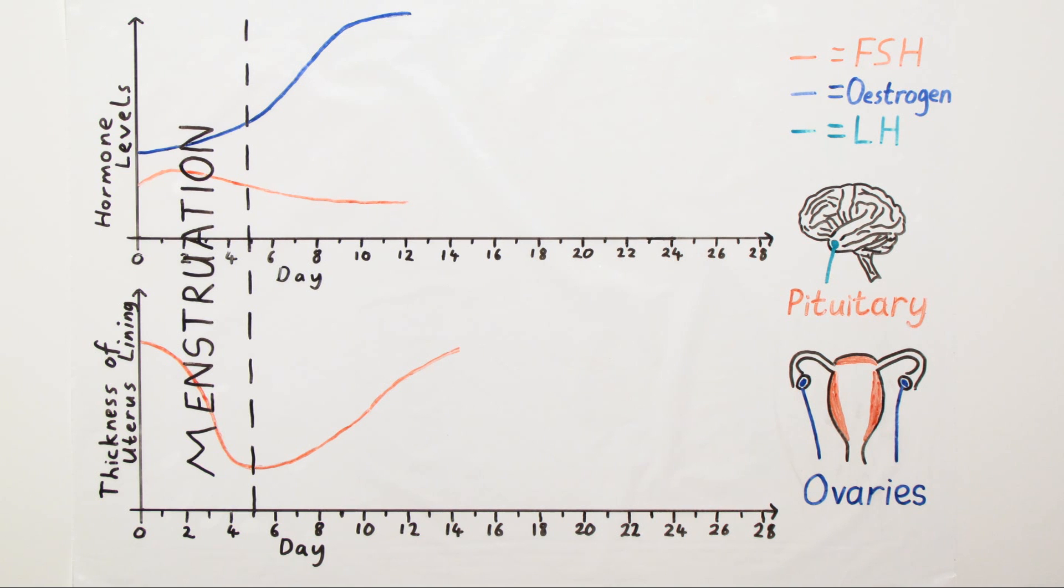The pituitary gland produces a range of hormones and one of the other ones which it produces is LH or luteinising hormone. The level of LH in the body remains fairly low for most of the menstrual cycle, but partway through the cycle it very suddenly and rapidly increases. This sudden increase in LH stimulates the ovary to release the egg that's been maturing since the start of the menstrual cycle. This is ovulation.